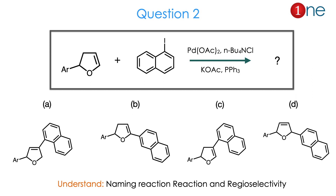Let us see question number 2. The starting material is a five-membered ring with a hydroxy-oxygen conjugated with an alkene, with aromaticity at the fifth position. You are using iodonaphthalene, palladium, and a quaternary ammonium salt, along with potassium salt and phosphine. Four products are given — they are carbon-carbon coupled products — and regioselectivity is the real question: whether the bond forms at the first or second carbon, and where the double bond ends up. The answer is D.